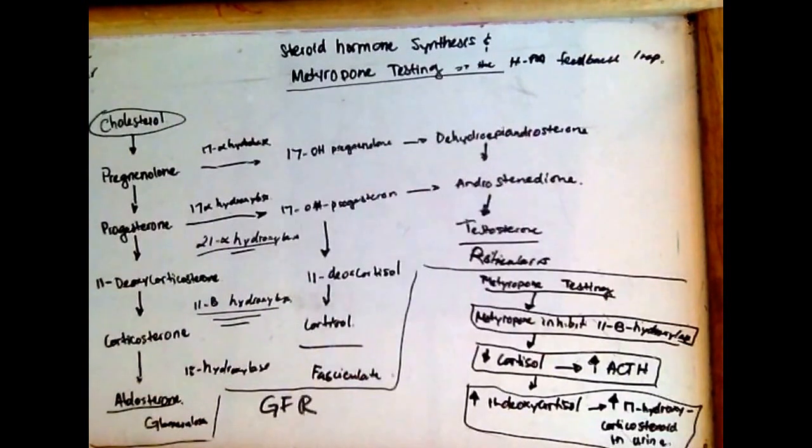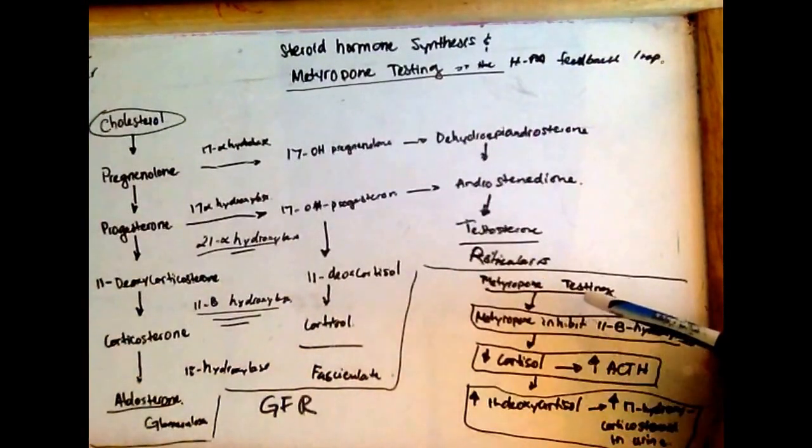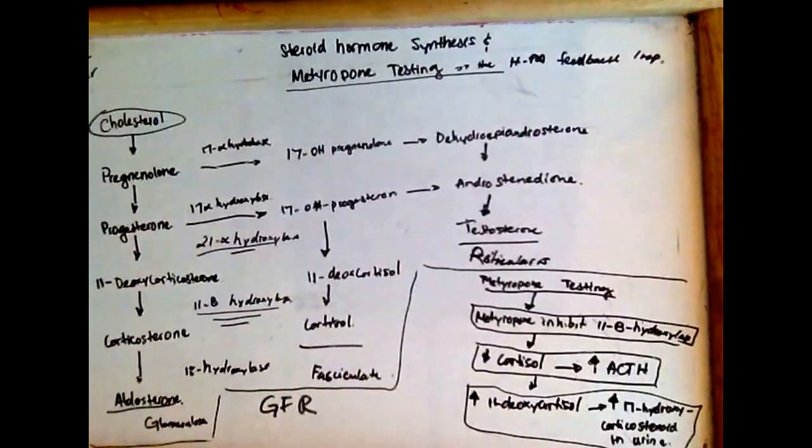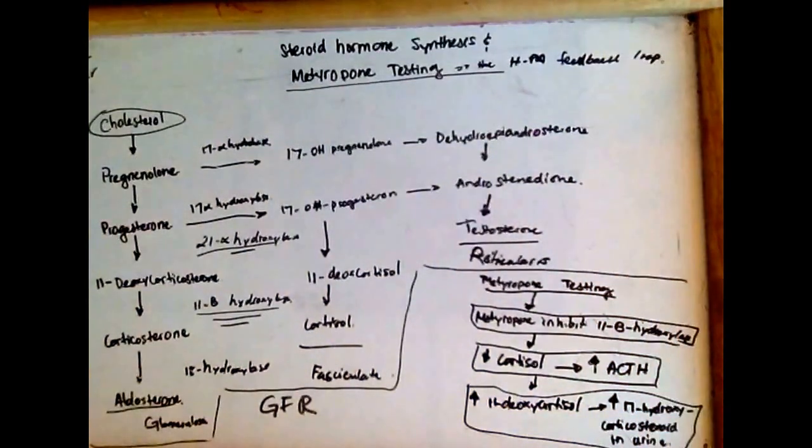The increase in 11-deoxycortisol leads to an increase in its metabolites, which are 17-hydroxycorticosteroids in the urine. If there is an increase after the administration of metyrapone, and we see an increase in 17-hydroxycorticosteroids in the urine, we know that the hypothalamic-pituitary-adrenal feedback loop is functioning normally.